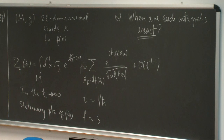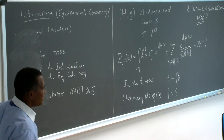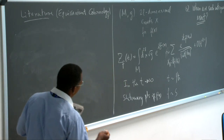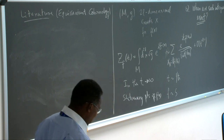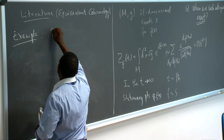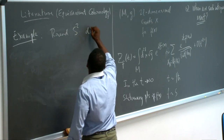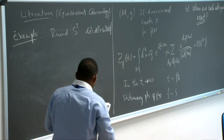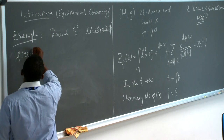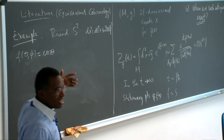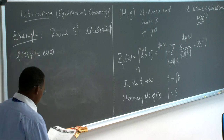Let me now do the one example that I would just leave on a blackboard if I could, because it will be recurrent in this whole lecture. We want to consider the round S² with the canonical metric dθ² + sin²θ dφ². My function f is going to be cosine of θ — you will see this is a miraculous choice, and at the end of the lecture you'll see why this is a particularly important choice.